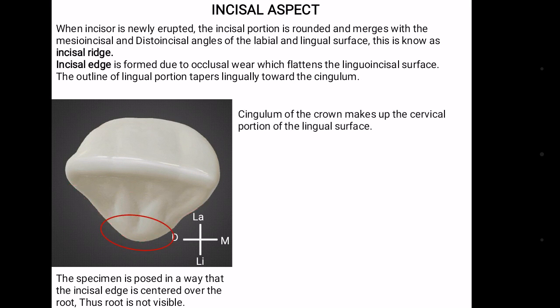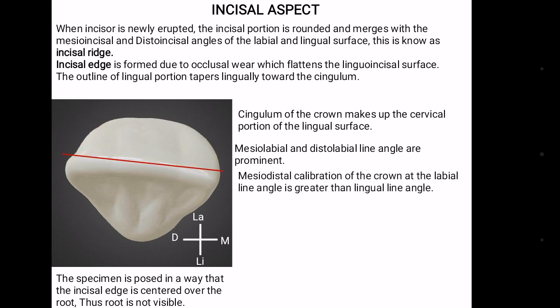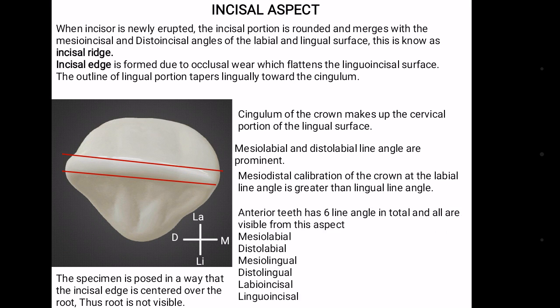Cingulum marks the cervical portion of the lingual surface. Mesiolabial and distolabial line angles are prominent from this surface. Labioincisal line angle is greater than linguoincisal line angle as the tooth shows tapering lingually. All six line angles of the anterior teeth are viewed from this direction: mesiolabial and distolabial, mesolingual and distolingual, and labioincisal and linguoincisal.